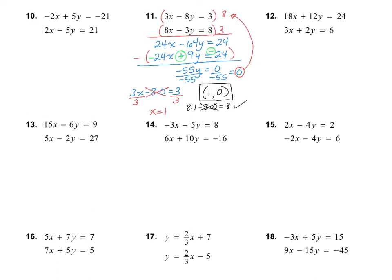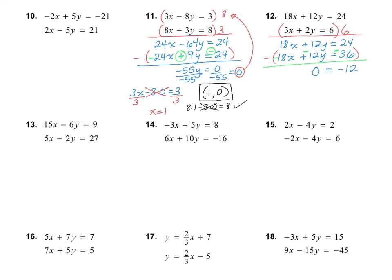Moving on to number 12. I need to multiply the bottom equation by 6 to eliminate the y's. The top equation stays the same: 18x + 12y = 24. The bottom becomes 18x + 12y = 36. Subtracting gives 0 on the left and -36 + 24 = -12 on the right. This is false, so there is no solution.